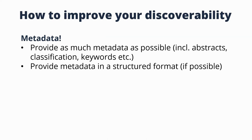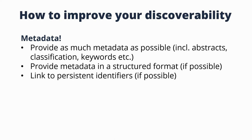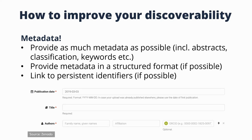If there is the option to write metadata in a structured format, do that. For example, if you have two fields — one for the name as a single string and one with separate last name and first name fields — choose the structured one, because then we can ensure your last name always stays your last name. Link to persistent identifiers if possible, because even if something goes wrong, we can recreate the information. One example is the Zenodo upload form, where when providing authors you can optionally provide their ORCID — which really makes it more discoverable.